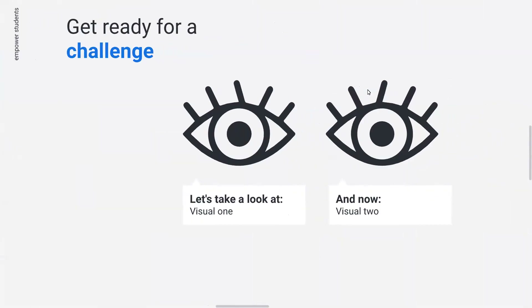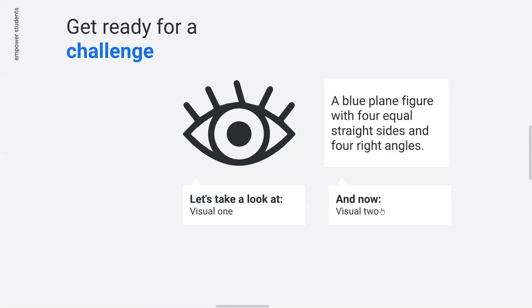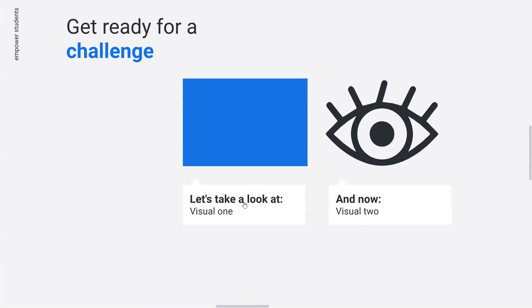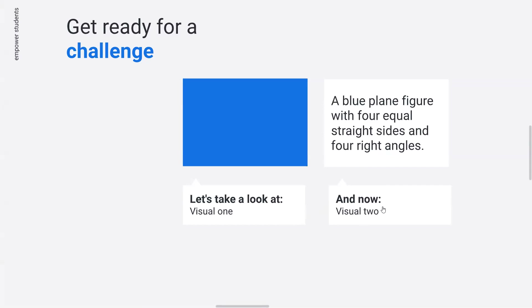Let's start with an example. Why is visual learning so important? We're going to do a basic exercise — I'm going to show you two visuals. The first is a blue square, and the second is the description of a blue square. The first was much easier to grasp in such a short period of time.